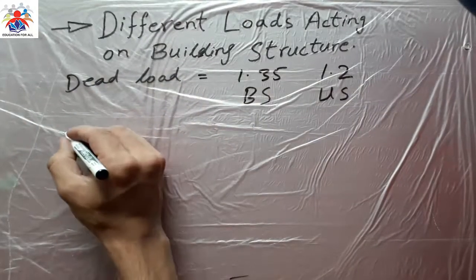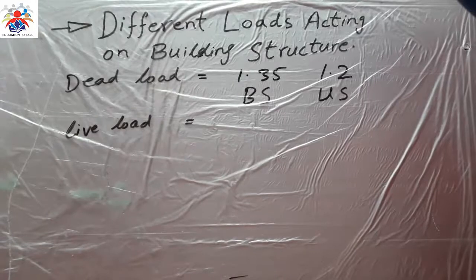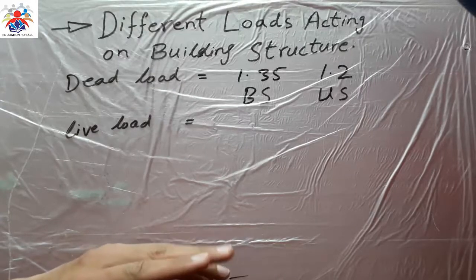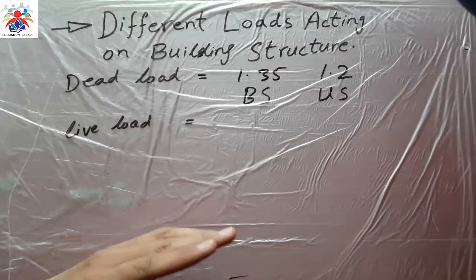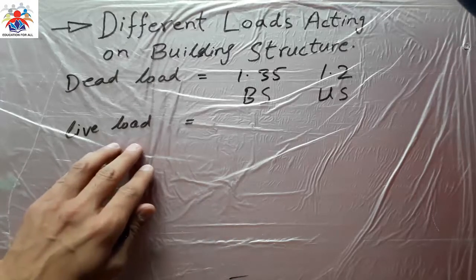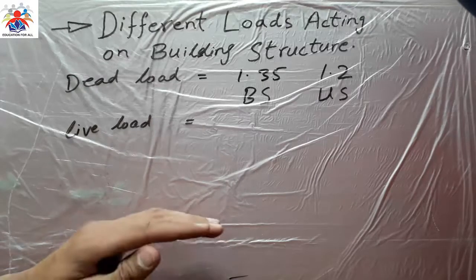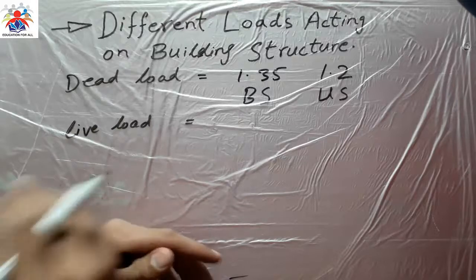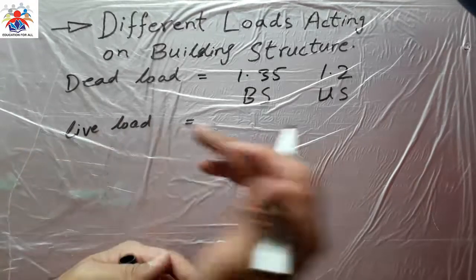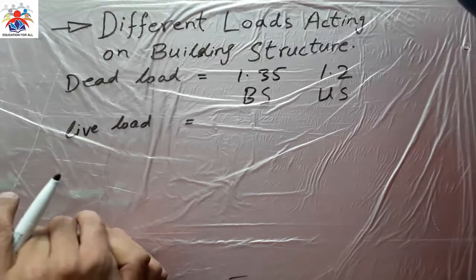The second load we have is live load. Live load is a load which is changing with time. For example, in a building, a bridge, or any other structure, this is a load which comes from things, from vehicles, or from people — it always changes with time.